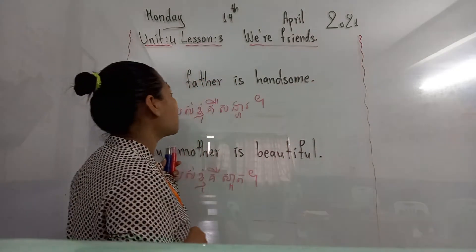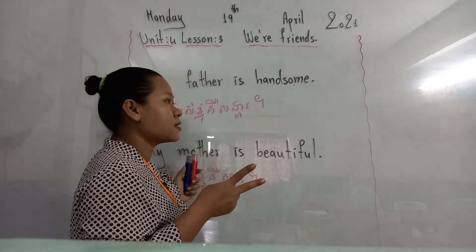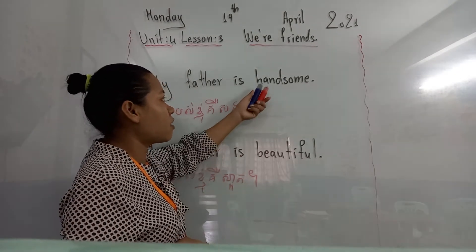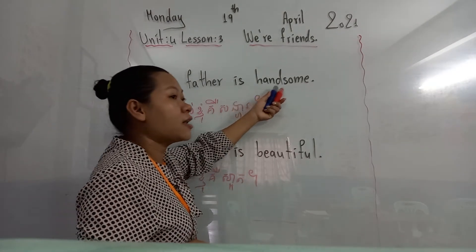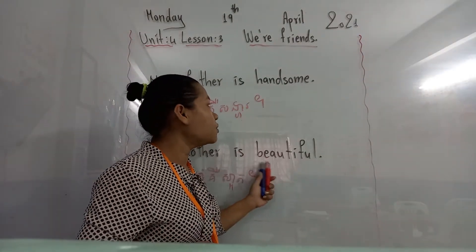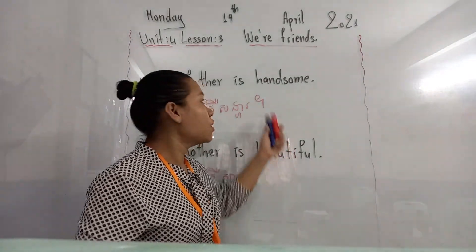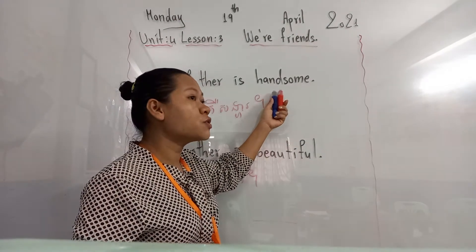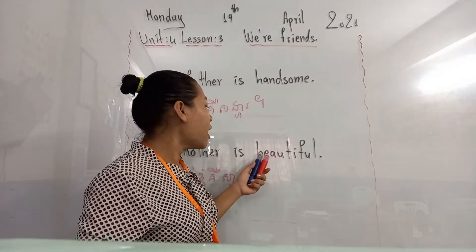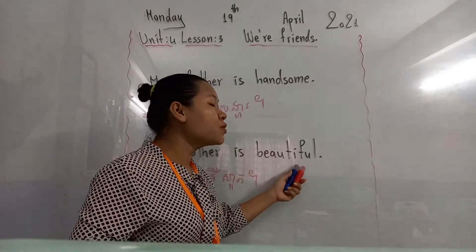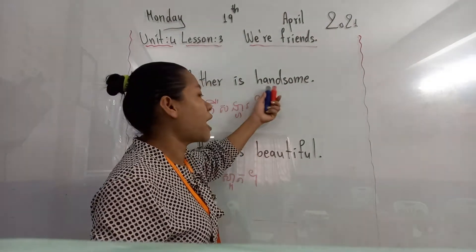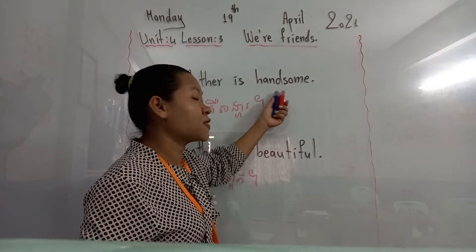Today there are two sentences to teach all of you. Do you know these words? Handsome. Beautiful. Handsome is used with a boy or man, and beautiful is used with a woman or girl.